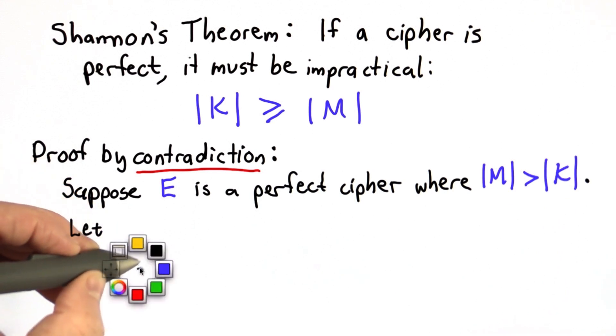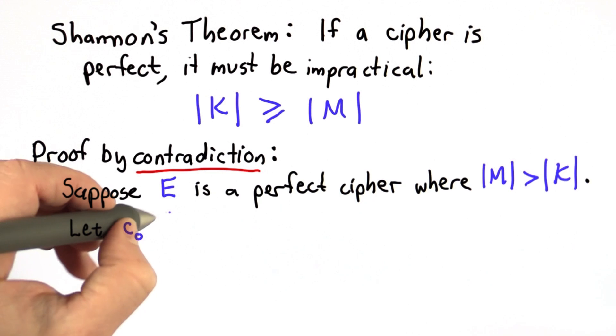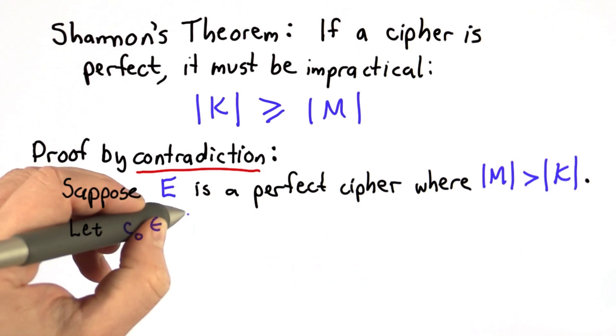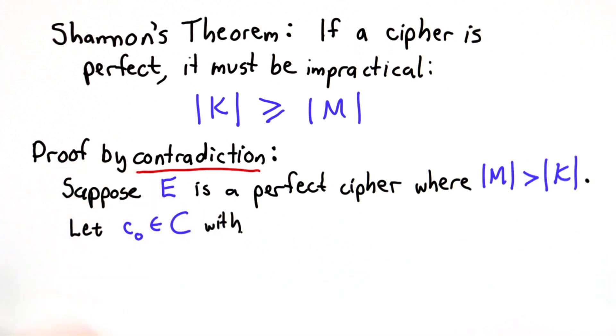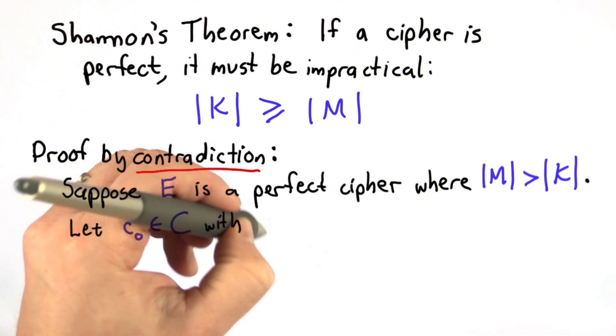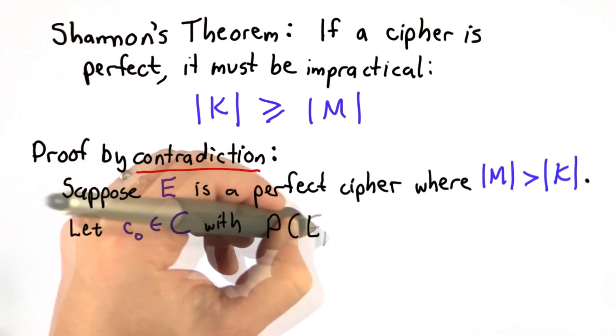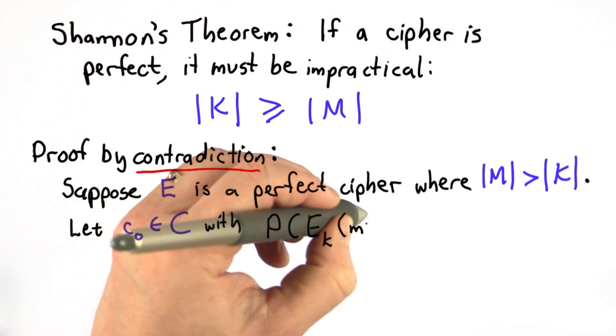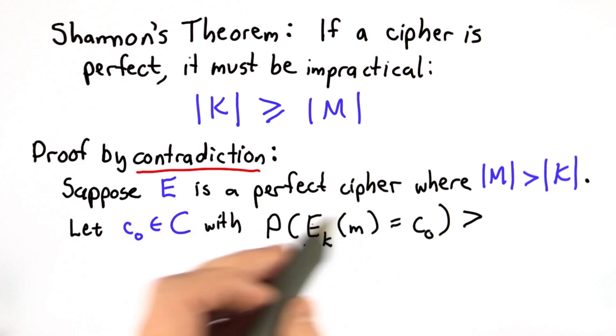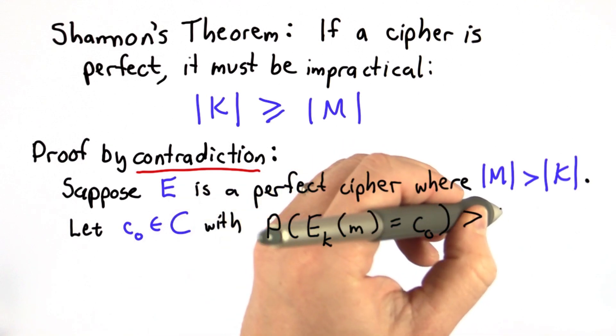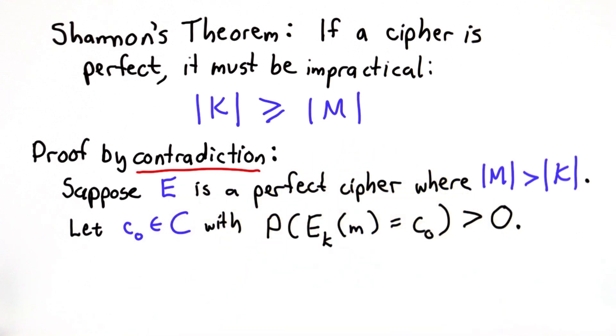There's some ciphertext, we'll call it C0, element of the set of possible ciphertexts. And let's assume that that ciphertext is possible. We know that there must be such a ciphertext, that there's some key that encrypts some message to C0. So the probability that a message and key get encrypted to this ciphertext is greater than 0. So we know that such a ciphertext must exist.